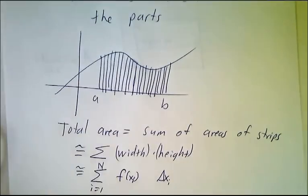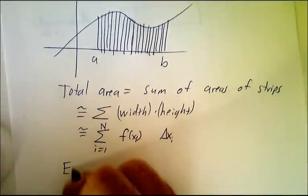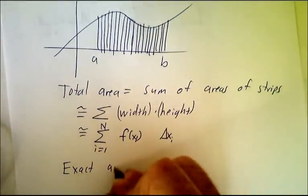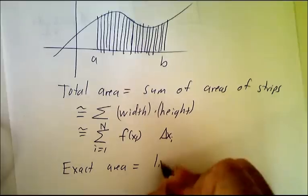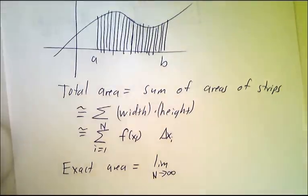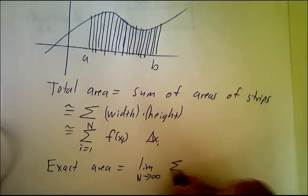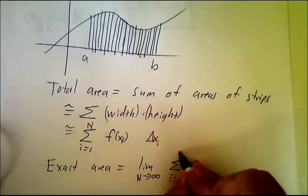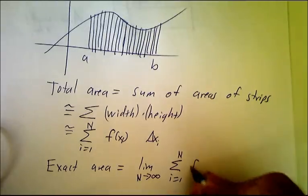How do you make it better still? You chop it up even finer. So if you want the exact area, that's the limit, as you chop things up finer and finer and finer, of the sum over all n strips.